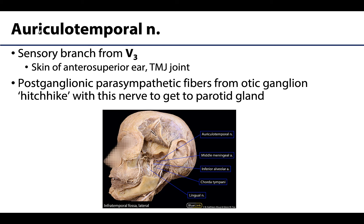Once those preganglionic fibers synapse, they are now called postganglionic fibers — post or after the ganglion. These postganglionic parasympathetic fibers need to reach their target organ, which in this case is the parotid gland. This will happen by hitchhiking with another nerve that is already heading that way: the auriculotemporal nerve.